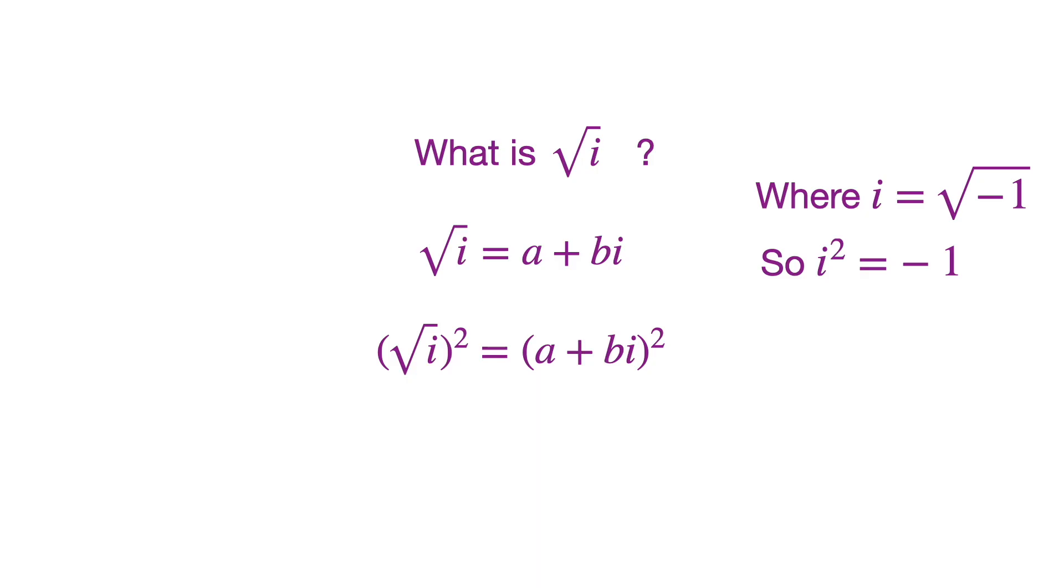Now let's square both sides of the equation. Multiplying that out, this is what we get. And now keep in mind that bi squared is b squared i squared. And since i squared is negative 1, that's equal to negative b squared.